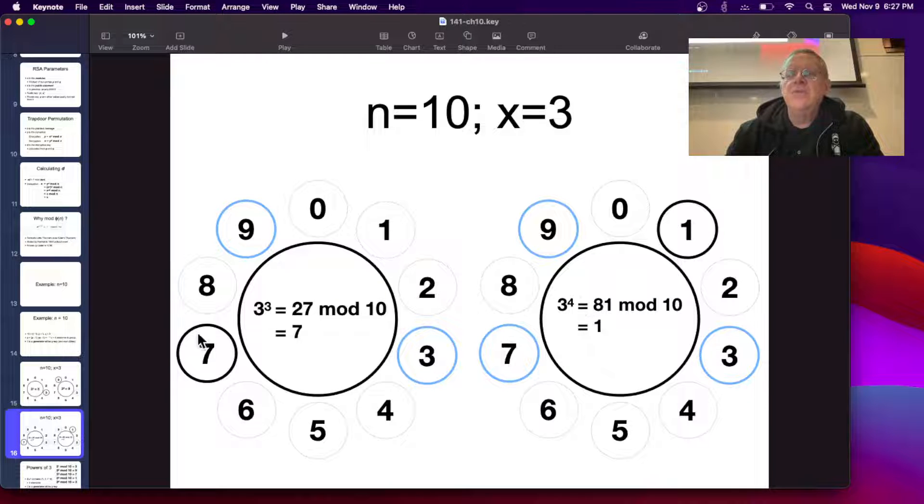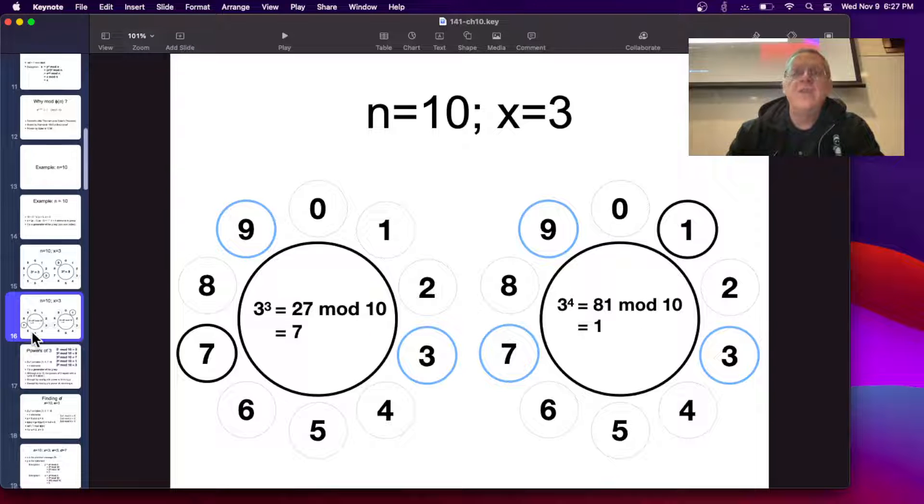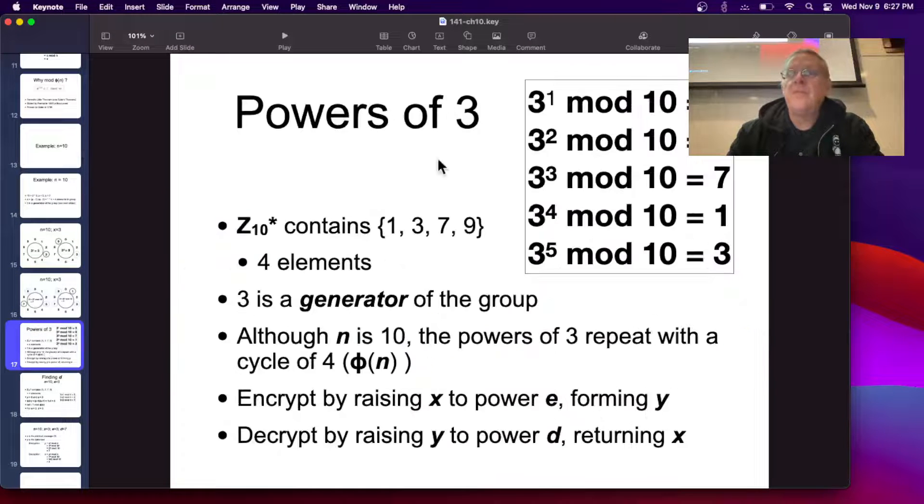So all you have to do is start with the generator and raise it to successive powers, and you will generate all the elements in the group. And therefore, if this was your plain text message, x equals 3, you would raise it to these powers, and that's how you would encrypt it and decrypt it. So here's the powers of 3. 3 to the 1, 3 to the 2, 3 to the 3, 4, same thing we just did. And 3 to the 4th is 1, so 3 to the 5th is 3 again, so it's just going to go around this pattern of numbers. It's 3, 9, 7, 1, 3, 9, 7, 1, forever. It's a generator of the group.